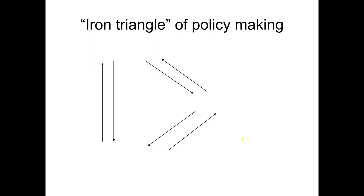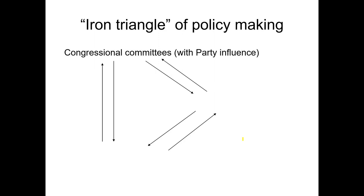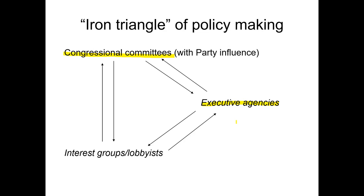This is also part of what we call the iron triangle of policymaking. It's considerably more complicated than this, but the three main prongs of policymaking are the congressional committees and the party influence, the executive agencies that are part of this policymaking particularly with rules and regulations, and then the interest groups and their lobbyists, which are involved in all phases of the process in order to try to get the policies that they want passed to benefit their groups.